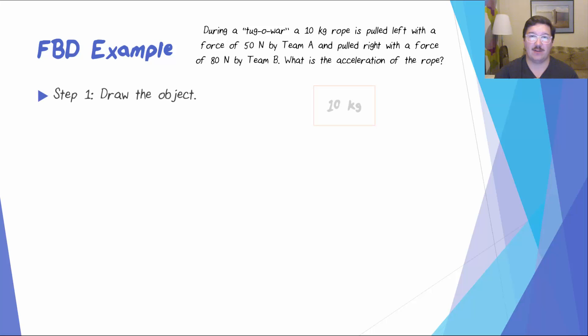Step one is to draw the object. This doesn't look very much like a rope, but that's okay. This is a diagram, not a drawing. You'll see that, often times, we write the mass of the object inside the box. The second step is to draw and label all the forces acting on the object. In this case, we have two. The force of team A to the left, and the force of team B to the right.